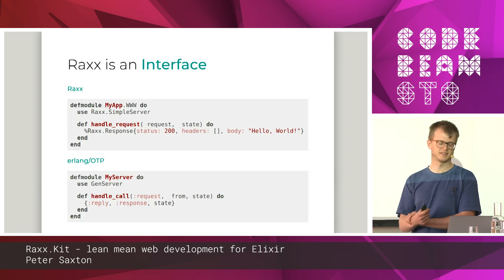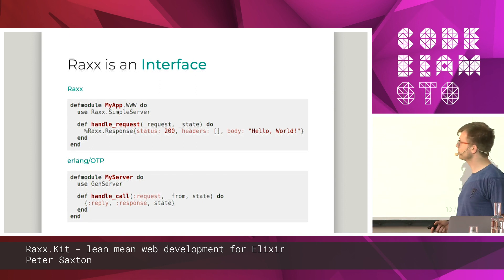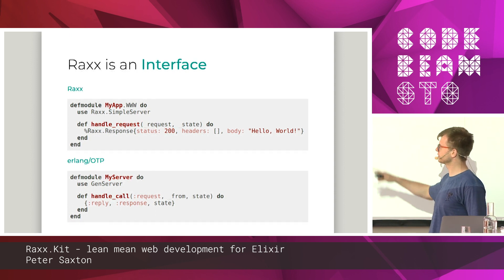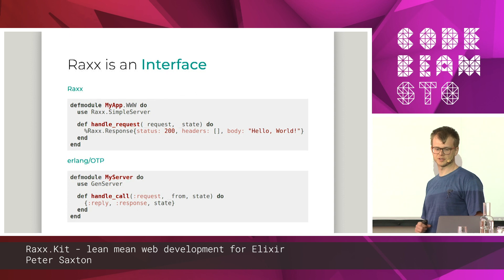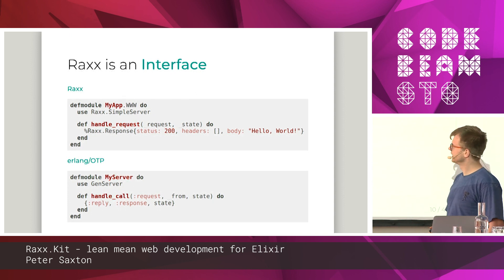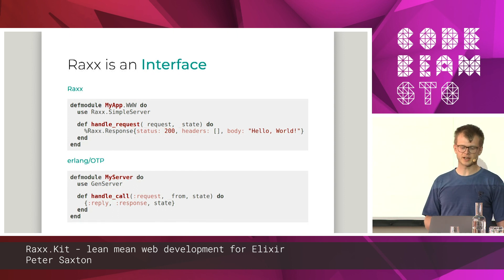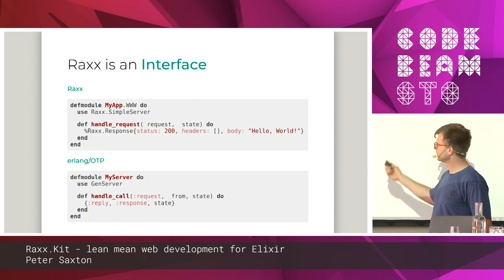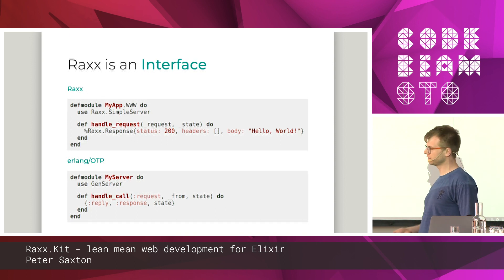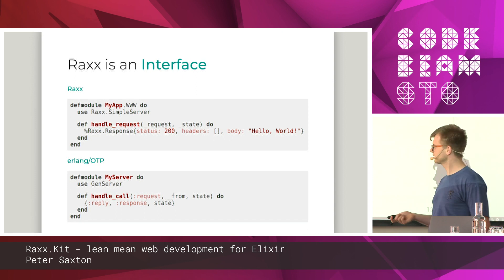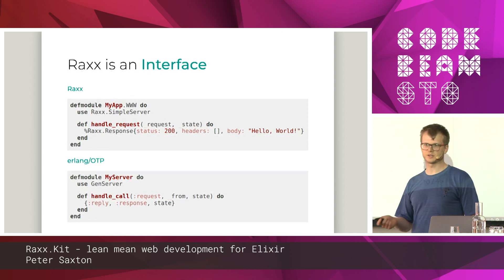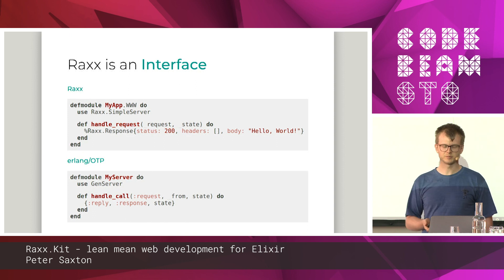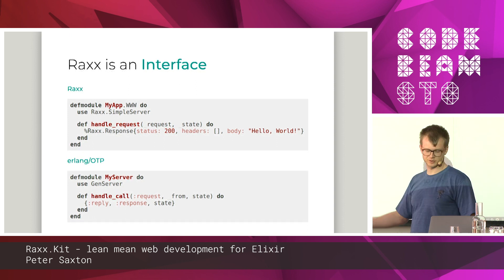First things first: Raxx is an interface. At the top we have Raxx — this is the simplest website you can make — for any request and any config or state, we are going to return a 200 response and hello world. It is just a data structure. The whole point of Raxx is to make it look like idiomatic Erlang or Elixir code. For contrast, we have a GenServer below — a GenServer is just another kind of server. You get a message in, which is the request, and you reply with some other message, which is the response. The principle is: data structure in, data structure out.